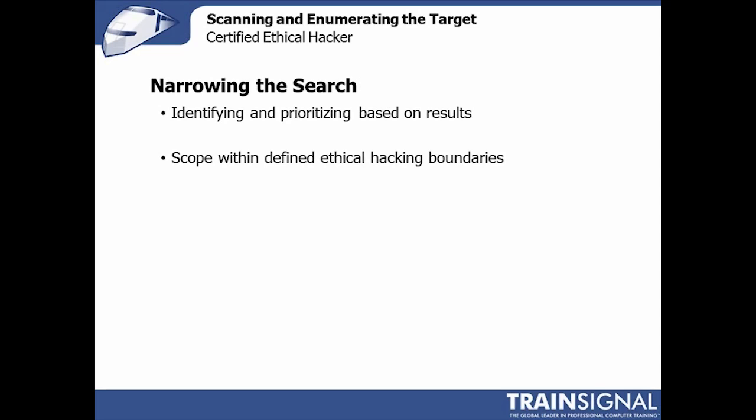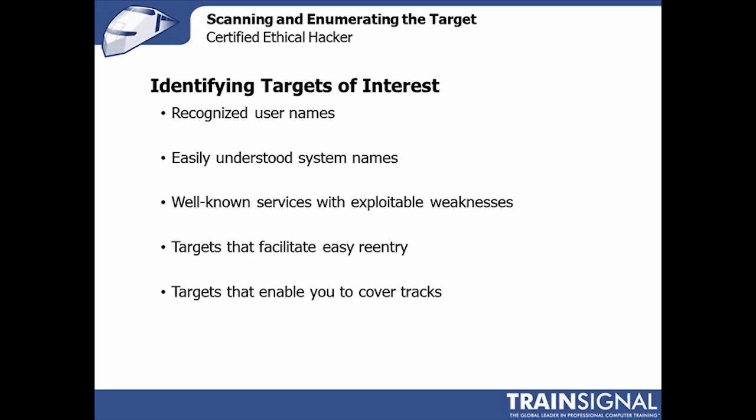Targets of interest are systems that have either recognized usernames — so if the CEO's name is Fred Smith, there's probably a machine called \\fred-smith or \\fred-smith-laptop, and I know where I'm going first. Easily understood system names are also telling — they'll often have an operating system prefix, the word 'dc' in the name, or a region name. For example, a system called \\sea-dc-001 is probably in Seattle and is probably a domain controller, and \\phx-dns-02 is the second DNS server in Phoenix. You can learn an awful lot just from the system name.